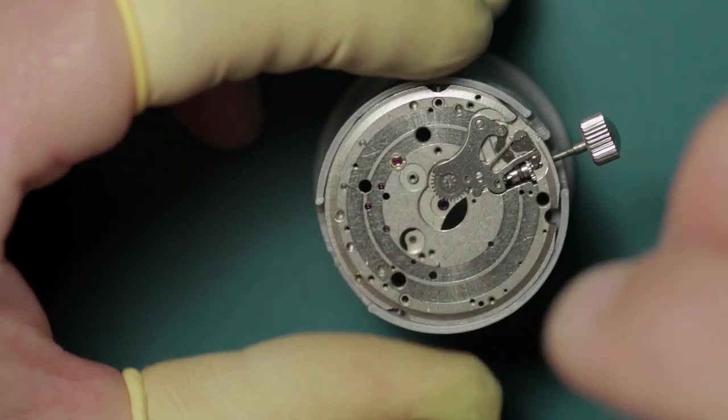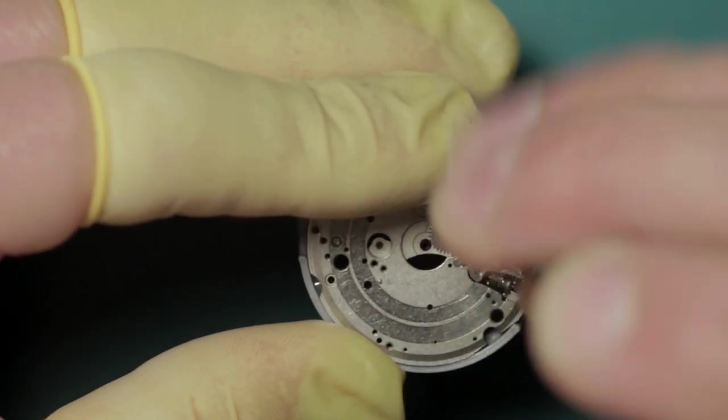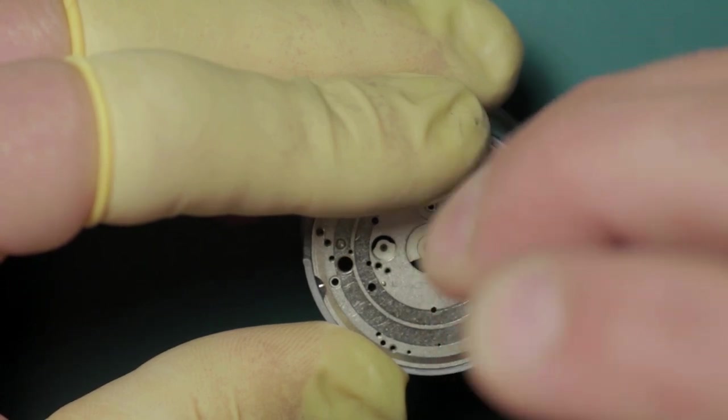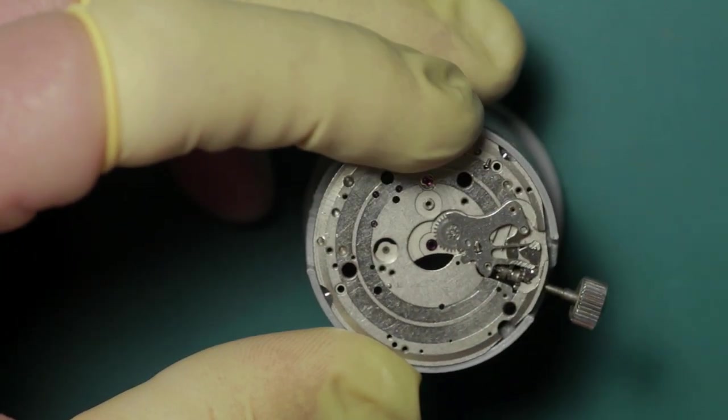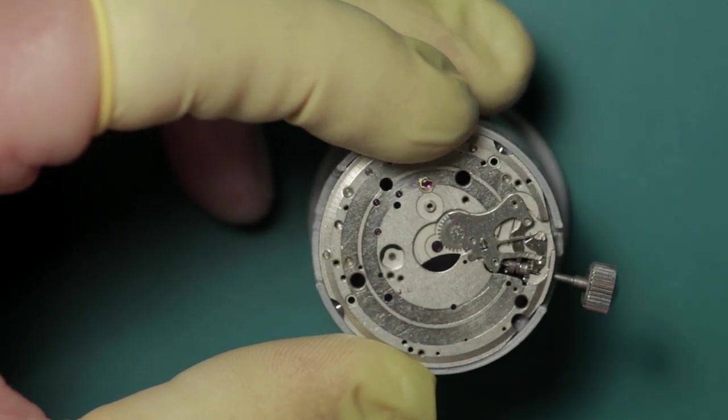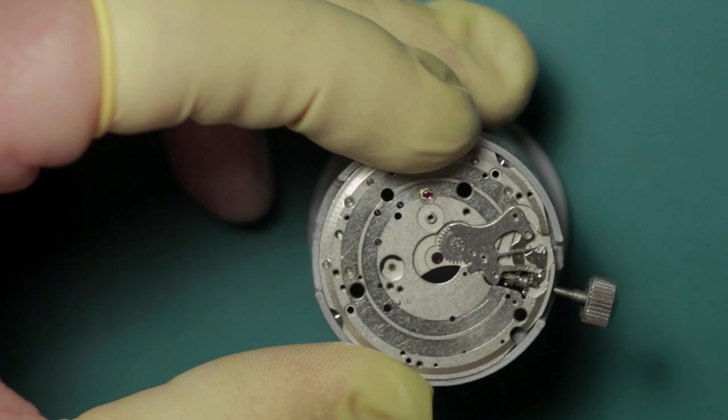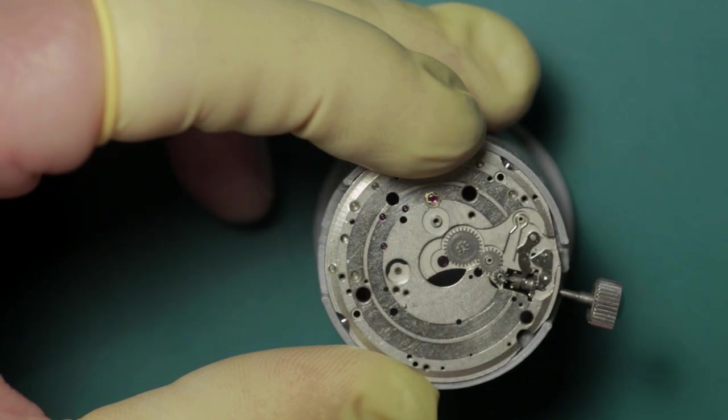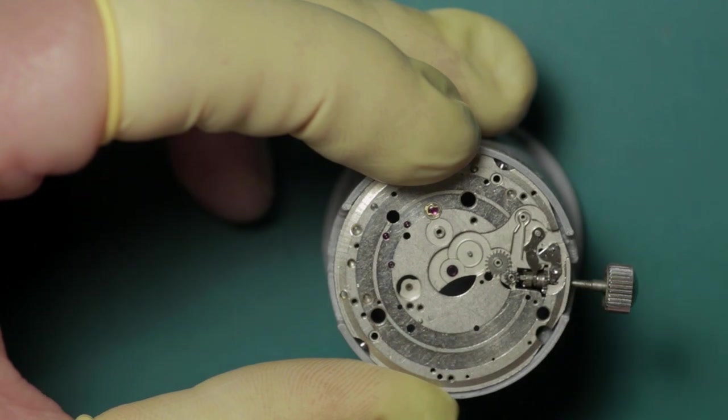We can remove the keyless works. We have two screws holding the setting lever spring. Once this is moved we can remove the minute wheel and the two intermediate wheels which allow time setting.